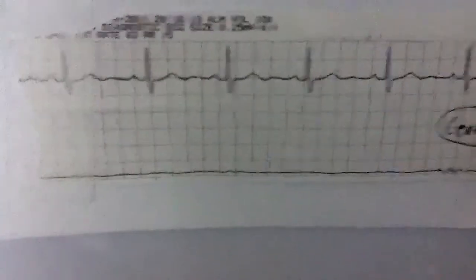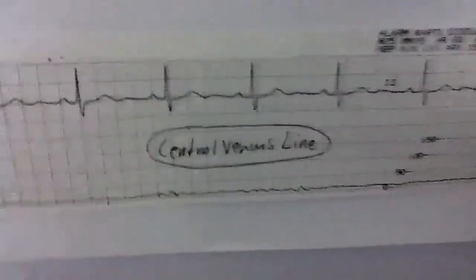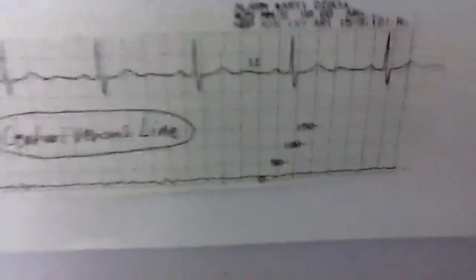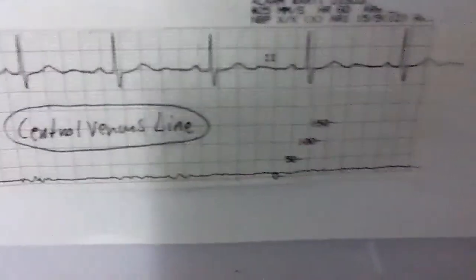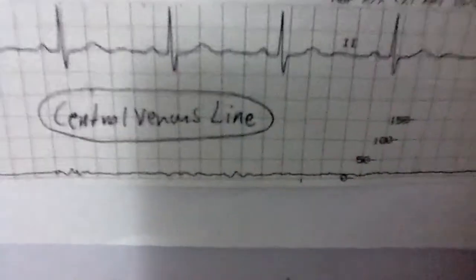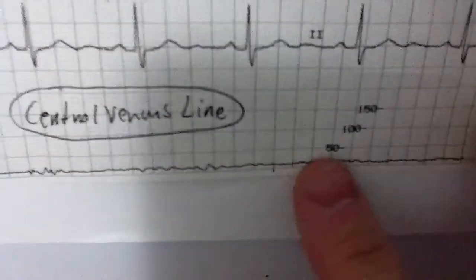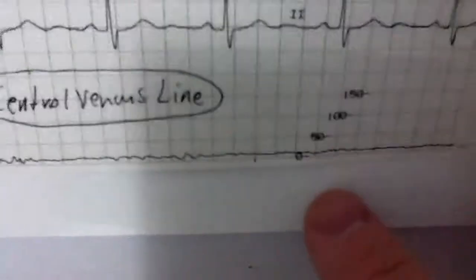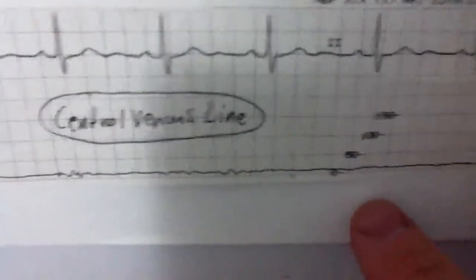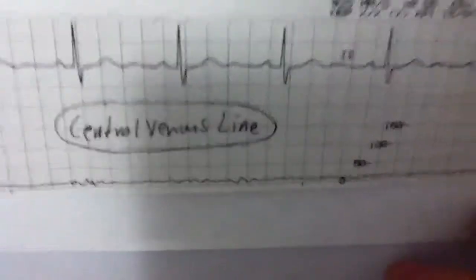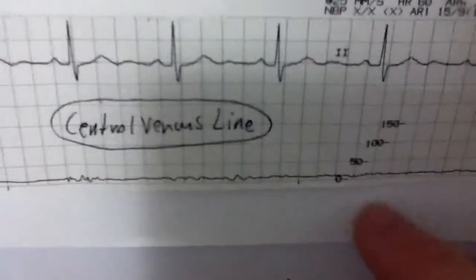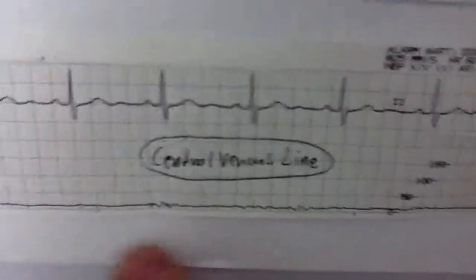Moving on down here, I actually have an example of a central line. Now, whoever is monitoring this patient set their scale up kind of interesting. If you see the scale here, it goes from 0 to 150. And if a normal CVP is anywhere from 2 to 6 millimeters of mercury, obviously this is going to create a very, very small tracing.